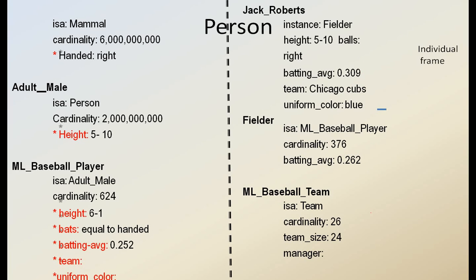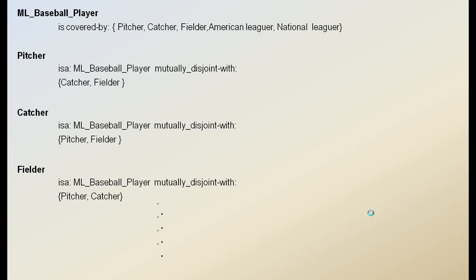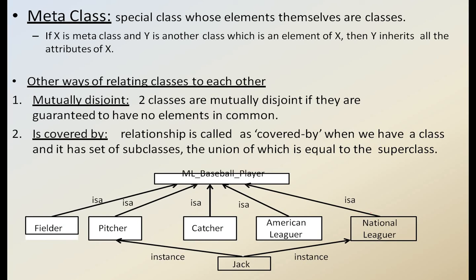Another example: person is-a mammal, adult male is-a person, baseball player is-a adult. Now, regarding meta classes — a meta class is a special class whose instances are themselves classes. Some classes are mutually disjoint. For example, male baseball player is-a fielder, pitcher, catcher, American leaguer, and national leaguer. Fielder is disjoint with pitcher and catcher; pitcher and fielder are also mutually disjoint. Like this, meta classes can be represented within frame systems.